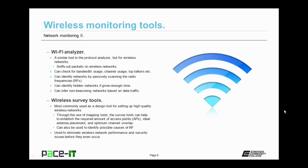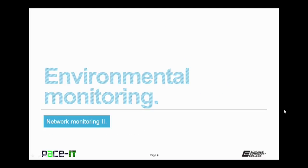Another type of wireless monitoring tool are wireless survey tools. They're most commonly used as a design tool for setting up high-quality wireless networks. When used in conjunction with mapping tools, survey tools can help establish the required number of access points for proper coverage, the ideal antenna placement, and the optimal amount of channel overlap. Wireless survey tools can also help identify possible sources of radio frequency interference, or RFI, and are often used to eliminate wireless network performance and security issues before they ever have a chance to occur.